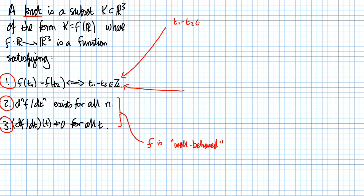Number one, T1 minus T2 in Z implies that F of T1 equals F of T2. And secondly, that if F of T1 equals F of T2, then T1 minus T2 is in Z, the integers.